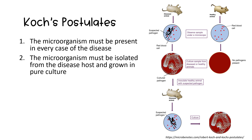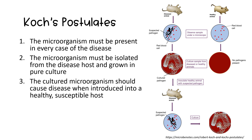The second criteria states that the microorganism must be isolated from the diseased host and grown in pure culture. The isolated microorganism should be able to grow in a laboratory setting away from the host tissue. This step is crucial for characterising the microorganism and studying its properties. The third criteria: the cultured microorganism should cause disease when introduced into a healthy susceptible host. The isolated microorganism, when introduced into a healthy host — usually an experimental animal — should be capable of reproducing the symptoms and characteristics of the original disease.